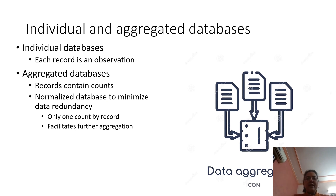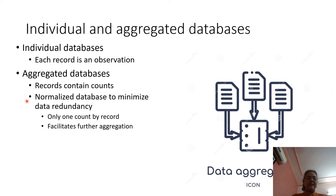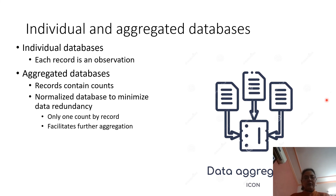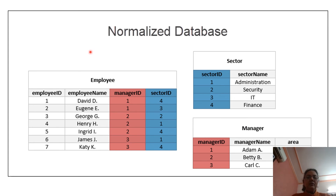Regarding individual and aggregated databases: when we form a database individually, each record is one observation. When we aggregate them, observations come in the form of counts. Aggregated databases usually come in the form of counts. If there is a lot of repeated data, we need to normalize the database, which means minimizing data redundancy so that the same information appears only once. This allows further changes to be made easily without re-entering the same data repeatedly.